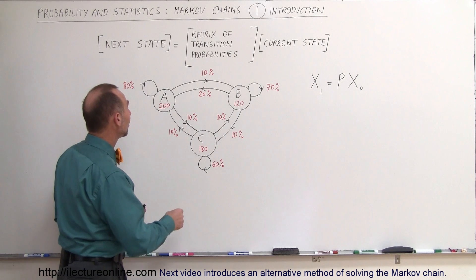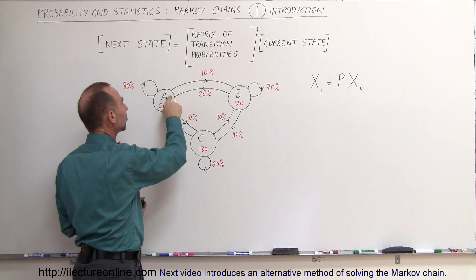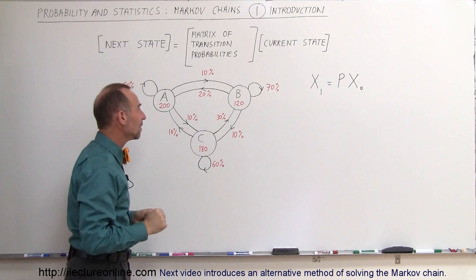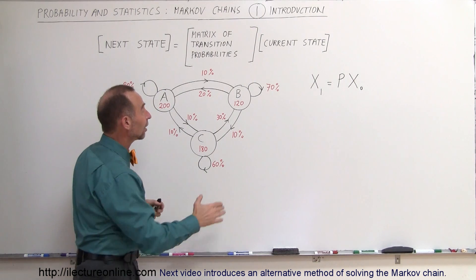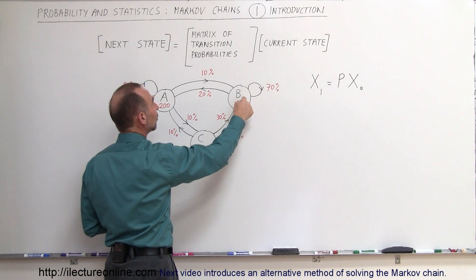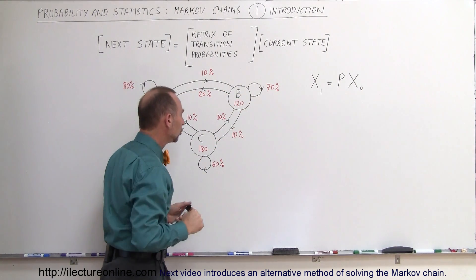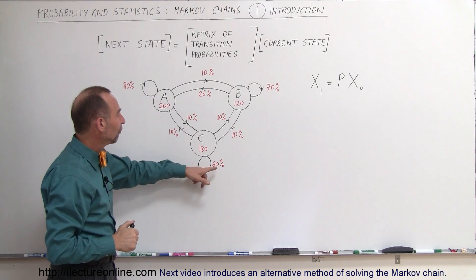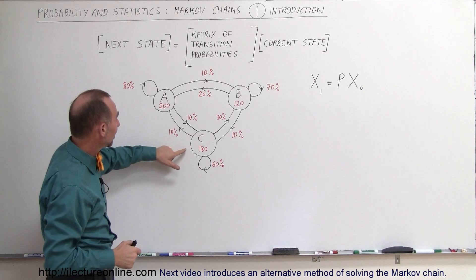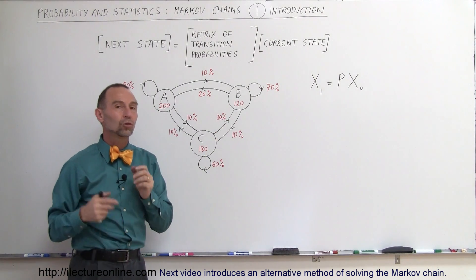In addition to that, for those people from Store A that do not go back, 10% will end up going to Store B and 10% will go to Store C. For Store B, out of the 30% that do not stay, 20% will go to Store A and 10% will go to Store C. And of the 40% that do not remain in Store C, 10% will go to Store A and 30% will go to Store B.